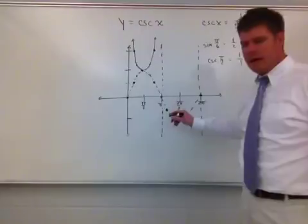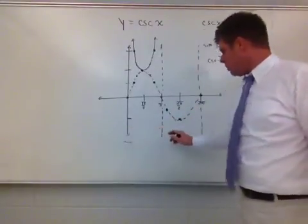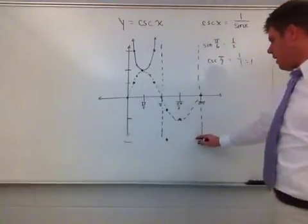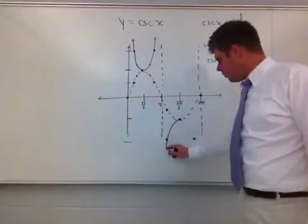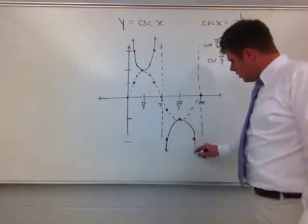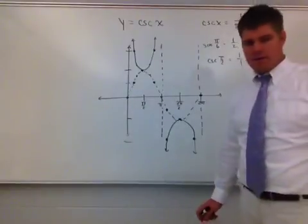Well, the reciprocal of negative 1/2, which is 1 divided by negative 1/2, is negative 2. So I come down here to negative 2 and then back over here with that negative 2. And what you find is I connect this with a smooth curve. So what it ends up creating here is kind of like the inverse effect of this function.